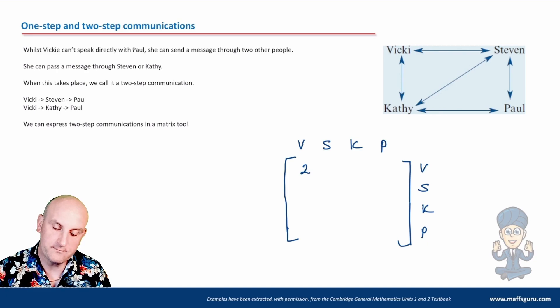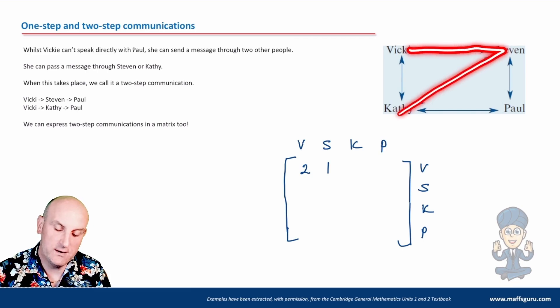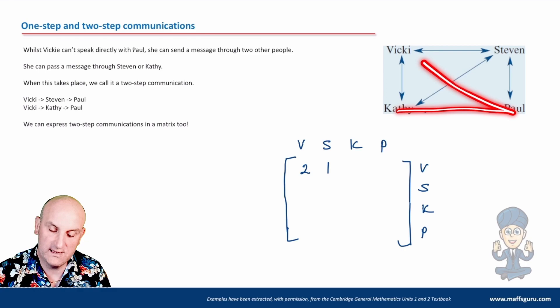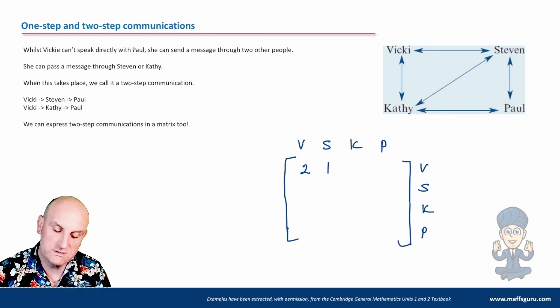What about Stephen to Vicky? Stephen to Vicky. I go Stephen to Kathy to Vicky. Is there any other way of doing it? Nope. There is only one. There's only one two-step way to go from Stephen to Vicky. So that there is going to be a one. What about Kathy to Vicky? So Kathy to Vicky again. Kathy can go through Stephen to Vicky, but no other way. She can't go through Paul to Vicky. So that one would also be a one.